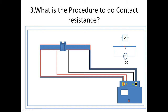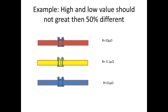We have two voltage measurement leads. If we compare the values, we will compare the value in three phases. If we compare the three phases, we will accept a variation of up to 50%.